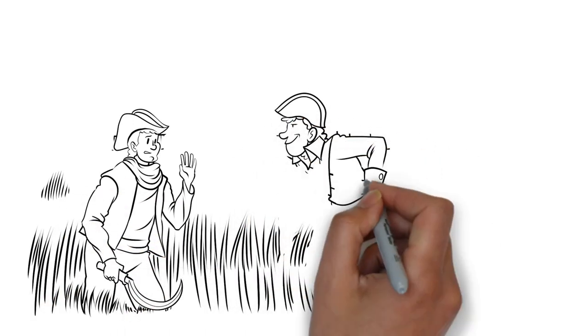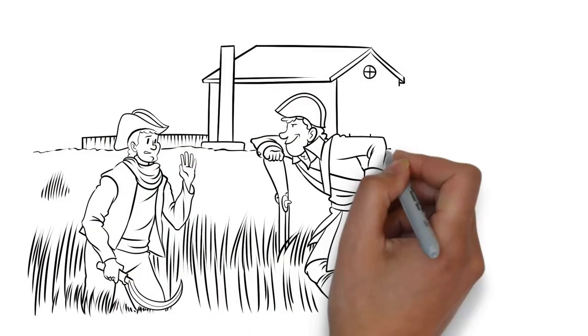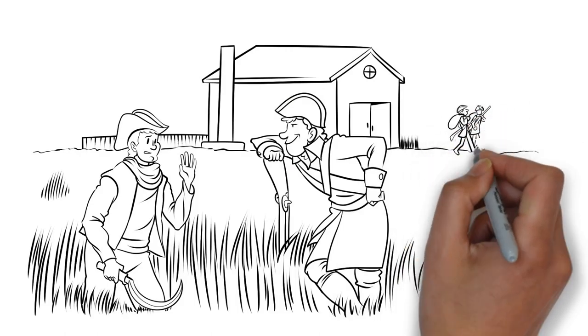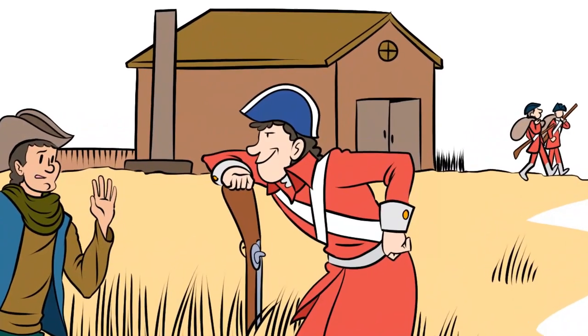In protection rackets, mobsters promise protection against robbery and vandalism for a fee. But if anybody refuses to pay, the mobsters ransack the store to extort payment from the owner. This is how colonists saw the British military.